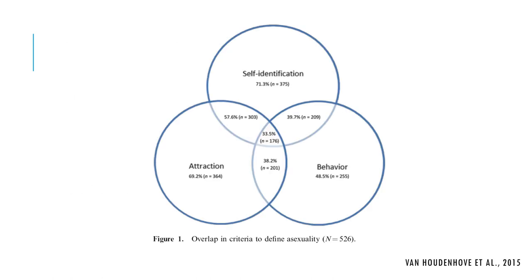The same issue — the multi-dimensional nature of sexual orientation — emerged in a research study on a large sample of people recruited on the AVEN website, the largest asexual community on the internet. Around 71% of the sample self-identified as asexual, around 70% defined their asexuality in terms of attraction, and around 50% in terms of behaviour. Only one-third of the sample fulfilled all three criteria at a time.